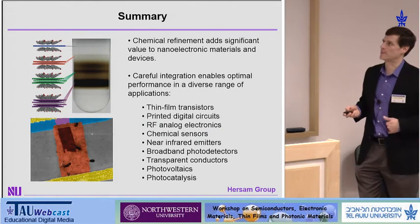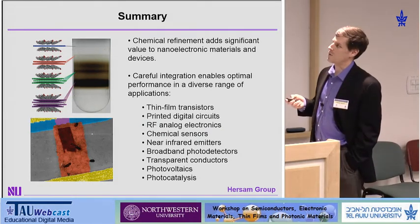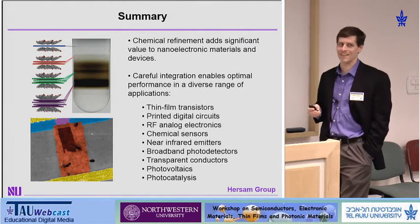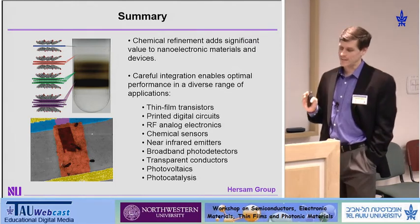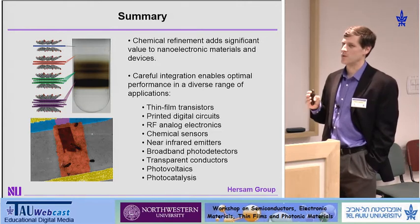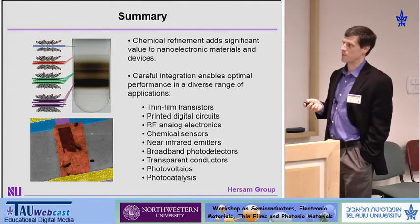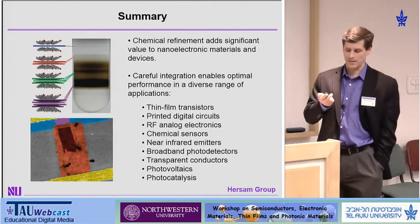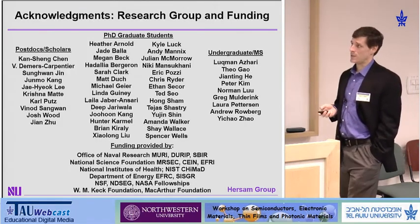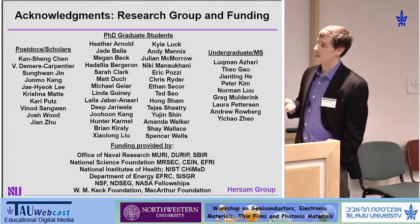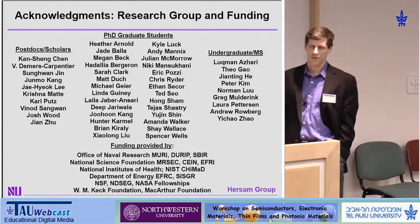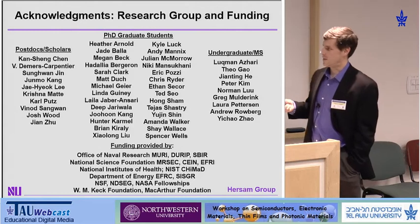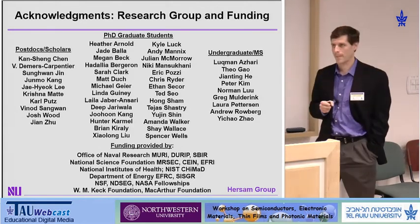In summary, chemical refinement adds significant value in nanoscience — it allows you to achieve highly monodispersed populations and therefore reproducible performance, and that allows you to move up the value chain. Instead of doing one-off devices in a research lab, you can commercialize technologies and get reproducible performance, as I've shown through many applications today. I want to thank all of my research group and collaborators, as well as the funding agencies, for their contributions to this work.